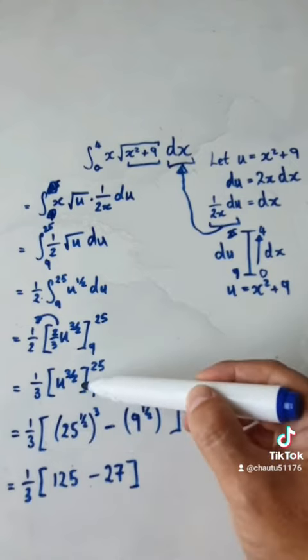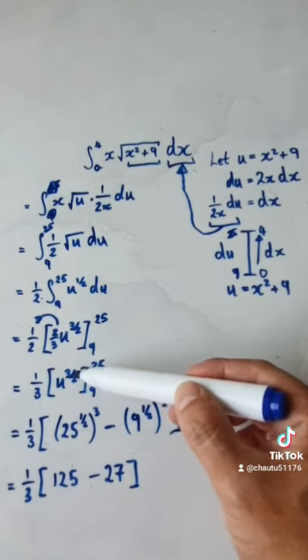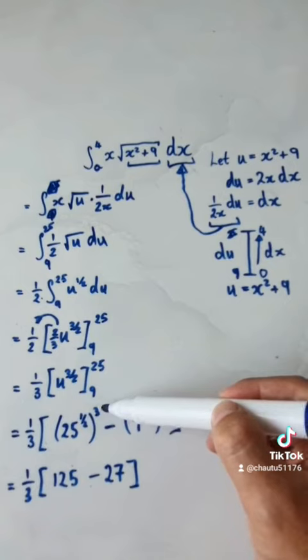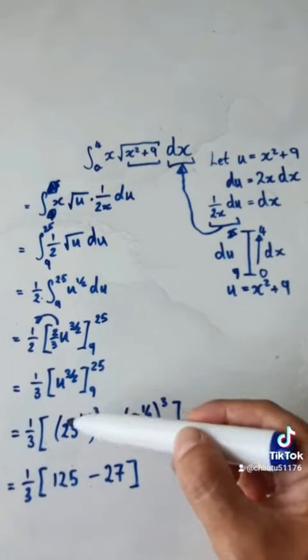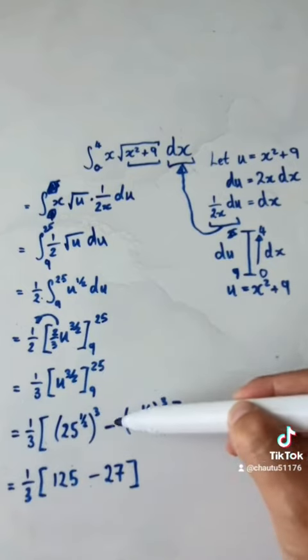That will give you this. Remember, I'm visualizing to the power of 3 over 2 as being to the power of a half, and then you cube it. So put 25 into here. That will then give you this. Take away, and then put the 9 into here.